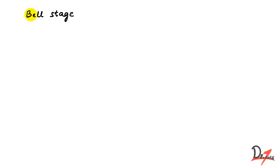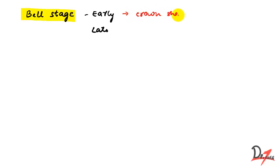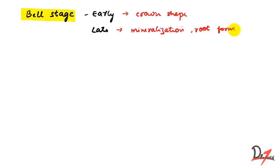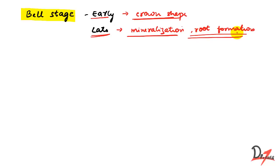Let's study about the bell stage today. The bell stage has been divided into the early bell stage and the late bell stage. In the early bell stage, the crown shape is determined. In the late bell stage, there is mineralization and root formation.